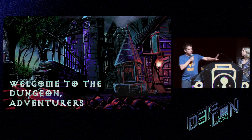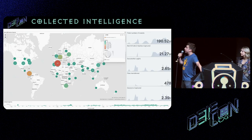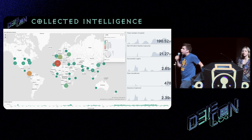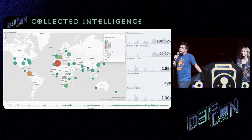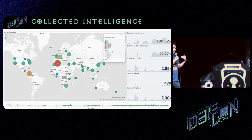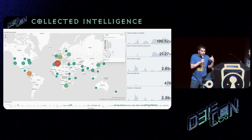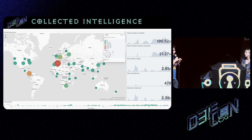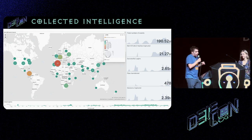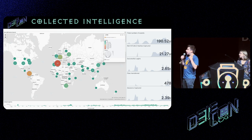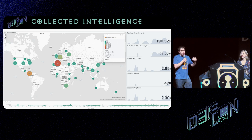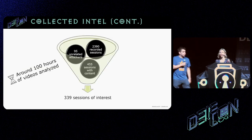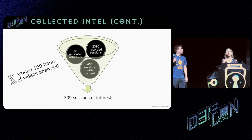We collected events for over three years — 190 million events. That's 21 million NTLM v2 hashes, because we support NLA network-level authentication. We have about 2,500 successful logins — our password is 'admin', so 2,500 people figured that out. We collected 478 files and more than 2,300 valid captures that we could replay: keyboard, clipboard, and mouse movement.